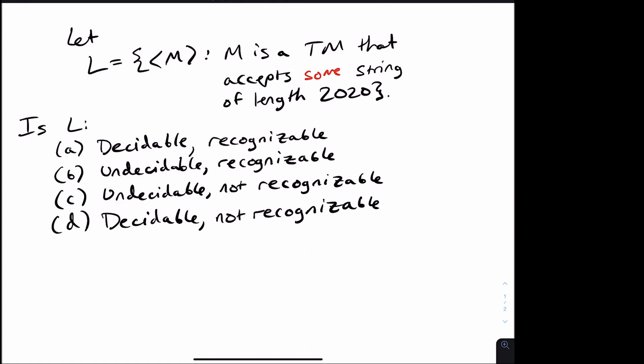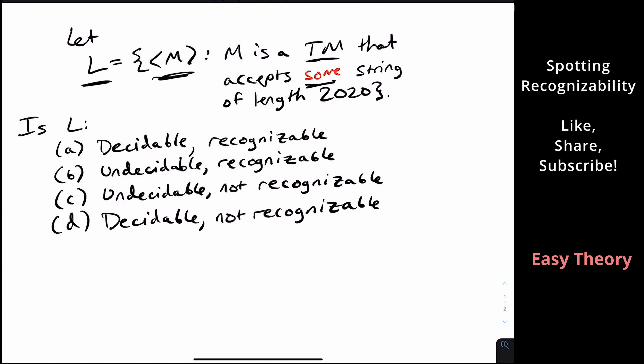Okay, welcome back to another edition of Easy Theory. So today I was sent this particular problem, which comes from a gate exam, believe it or not. So we have a language L right here, which is the set of Turing machine descriptions such that they accept some string of length 2020.